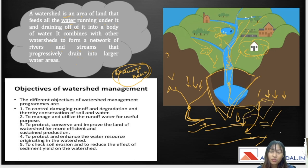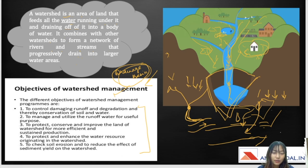Due to changes in environment, topography, and geographical features, there is more loss of water, and to conserve it we need watershed management. The objectives of watershed management include: controlling damage from runoff and degradation for conservation of soil and water; managing and utilizing runoff water for useful purposes; conserving and improving watershed land for sustainable production; protecting water resources originating in the watershed; and checking soil erosion to reduce sediment yield.